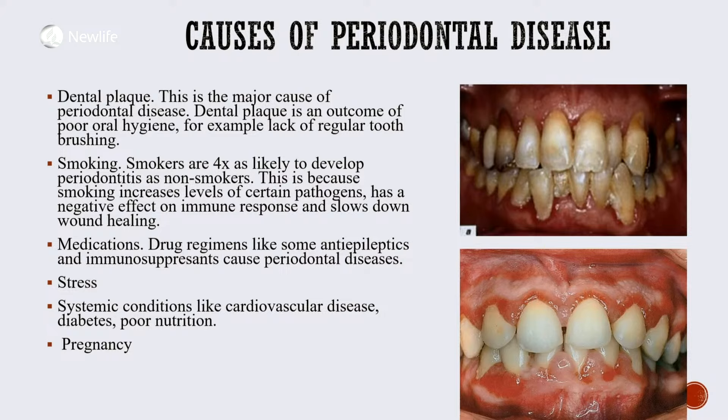Next, we have medications. Medications such as antiepileptics — for example, phenytoin for people who have epilepsy — and immunosuppressants may cause periodontal disease. Next, we have stress. Psychological stress may lead to periodontal disease because of the lowered immune response, which may manifest as gum disease.